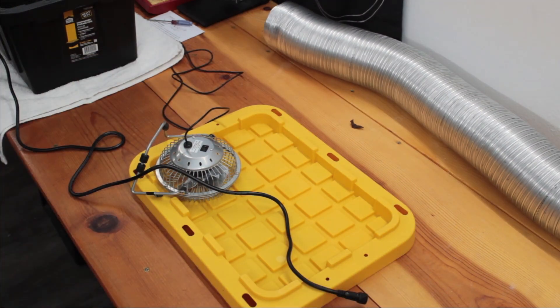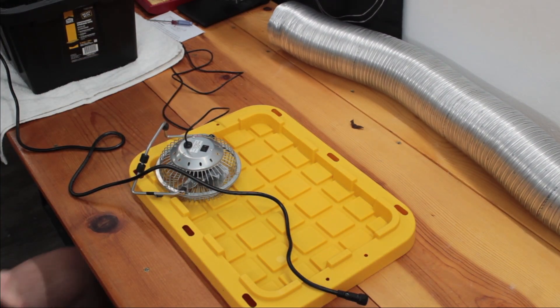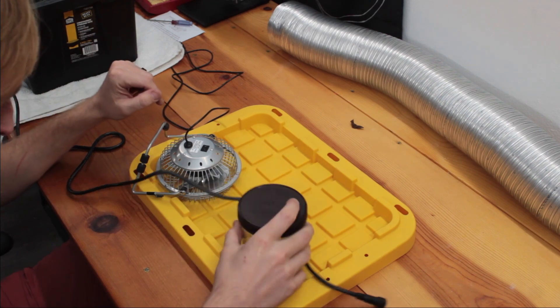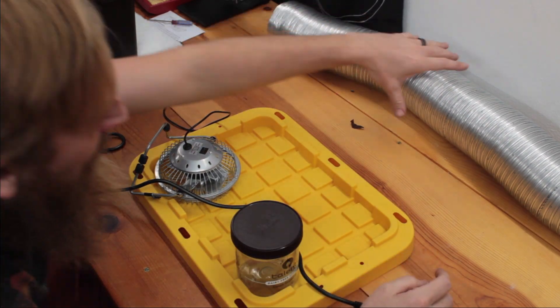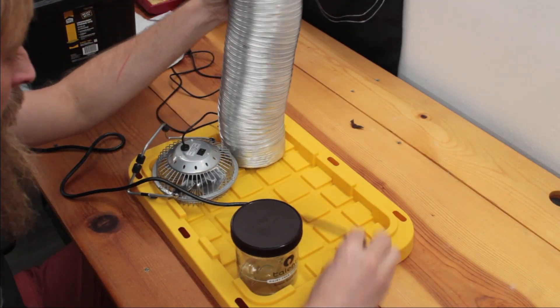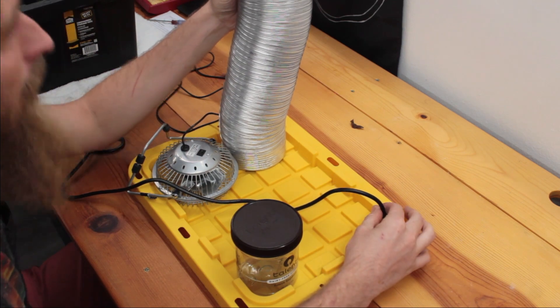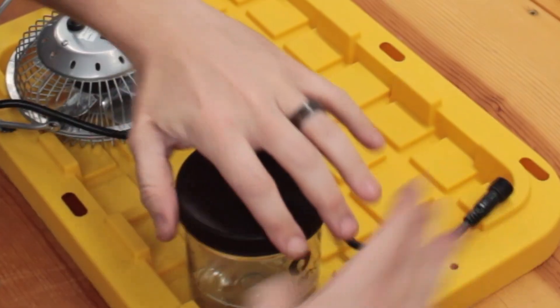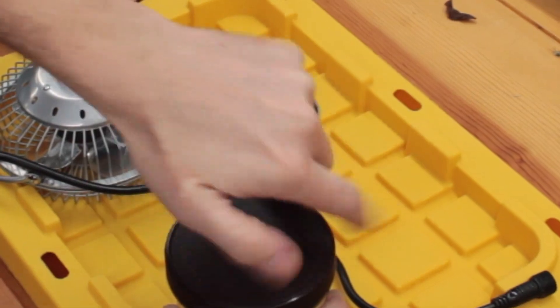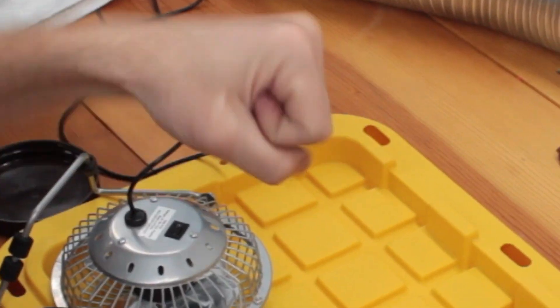While laying everything out, I had the idea to add a fill port. This would prevent me from having to lift the lid and disturb the system every time it needed to be refilled. The fill port is made from an old Sorbetto container. I used this because it had a threaded lid. You could just as easily use a peanut butter jar or something similar.